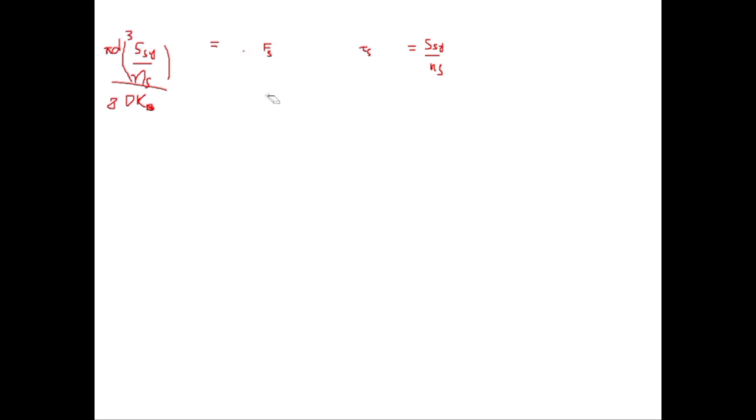In this equation all values are known except NS. The book states that factor of safety should be at least 1.2. So for safe operation we will take NS equals 1.2.